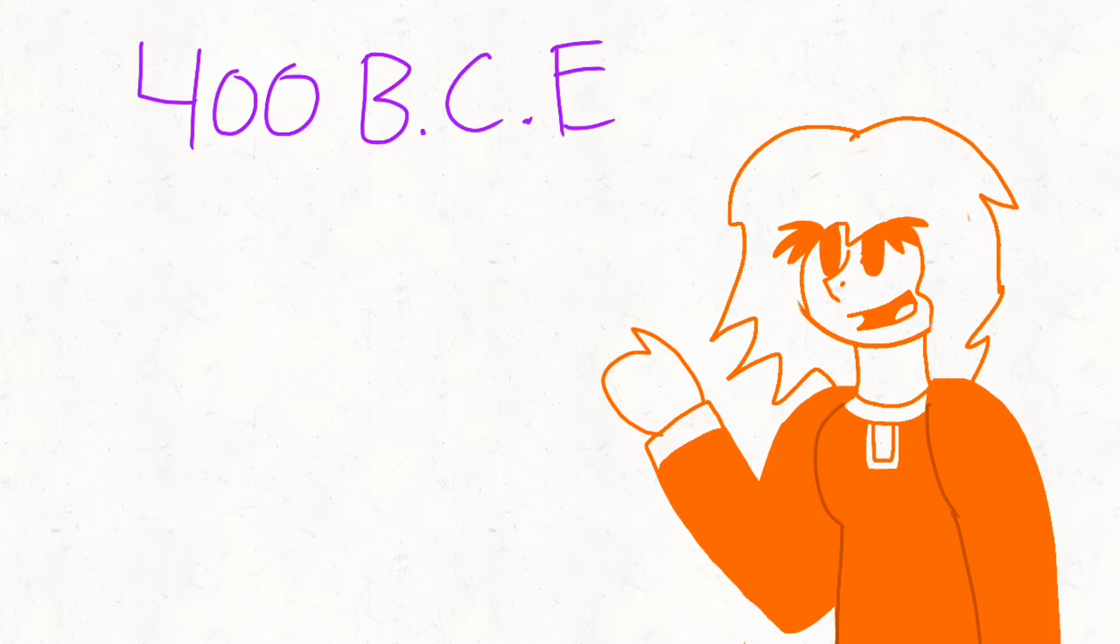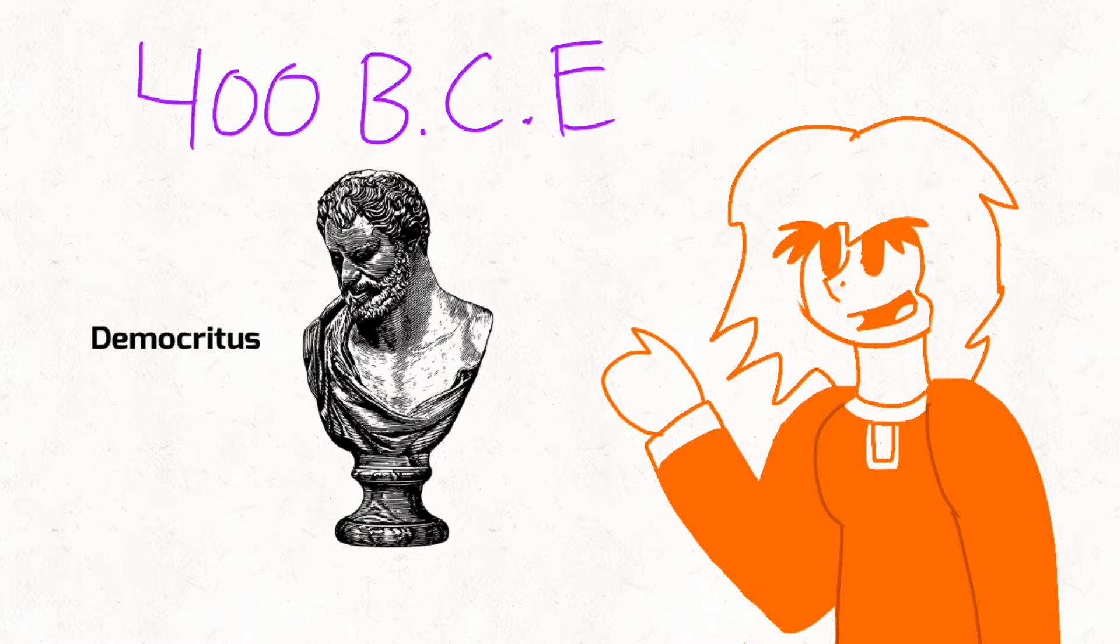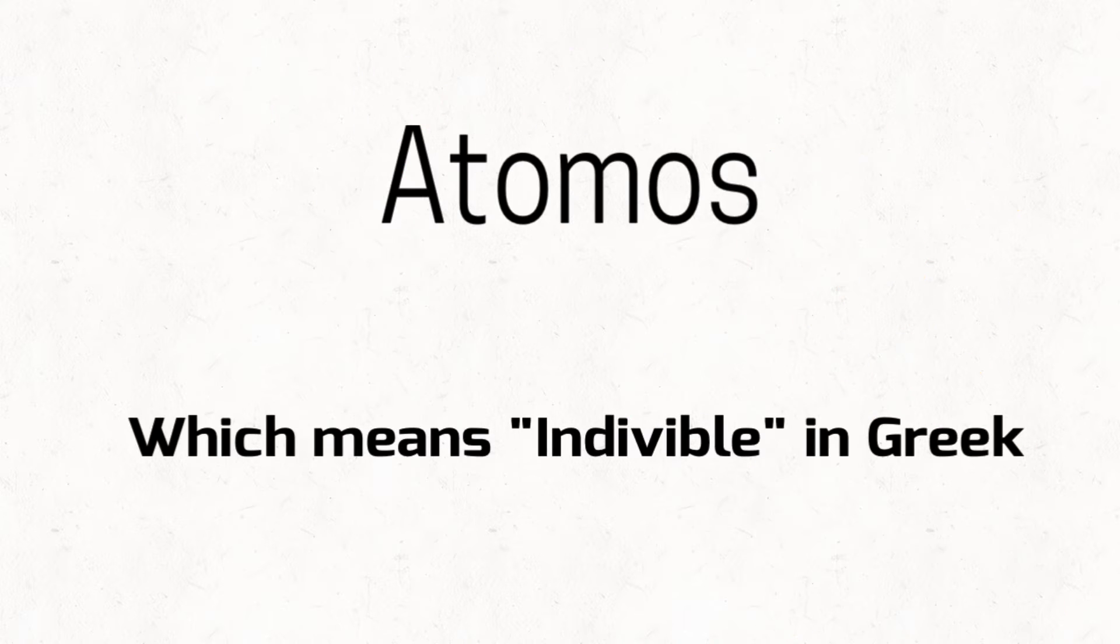So let's start off going way back to 400 BCE, where this guy named Democritus was a philosopher. He came up with questions. He wondered what would happen if you cut an object smaller and smaller, and how small would you be able to cut up the object. In conclusion, this led to there being a point where you can't cut any smaller. Democritus had a word for it. He called it atomos.